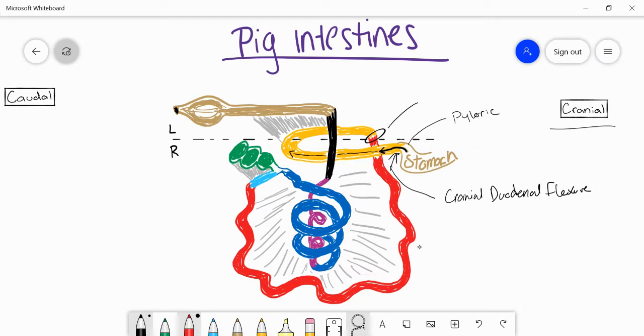Just combine the two names, duodenum jejunal flexure, and this will mark the start of the jejunum. The jejunum we have here in red. This is the second portion of the small intestine.